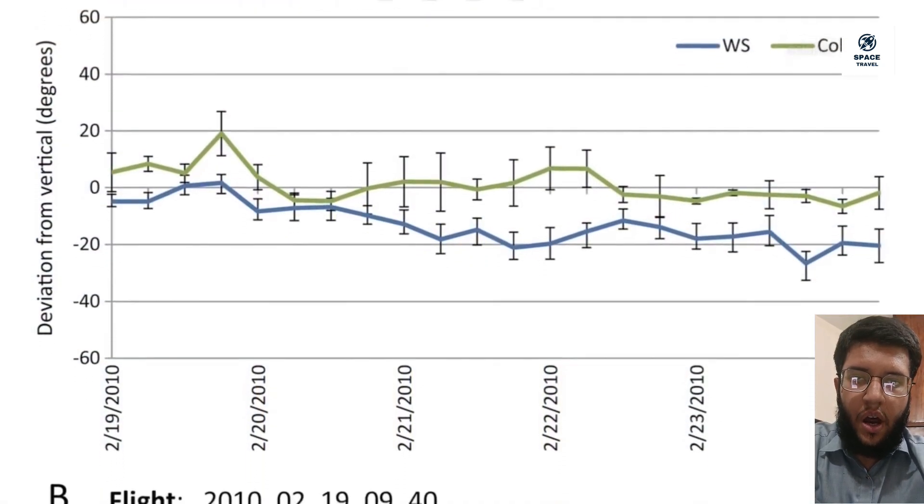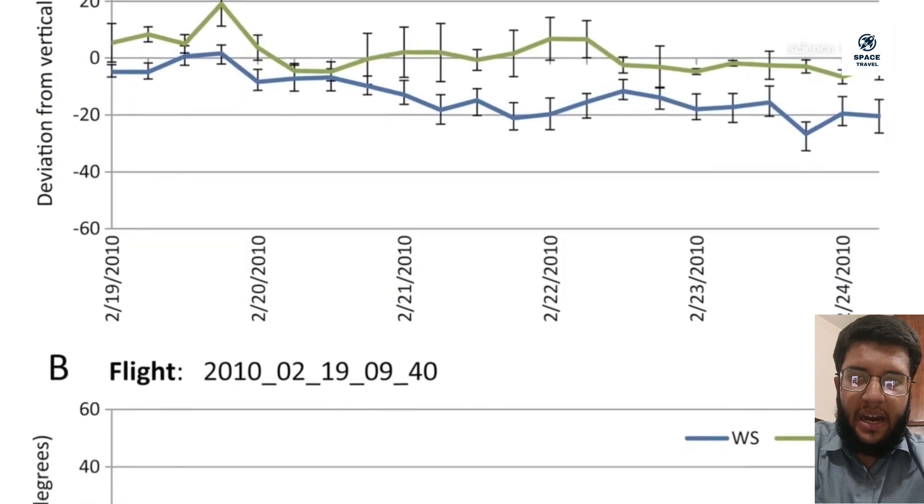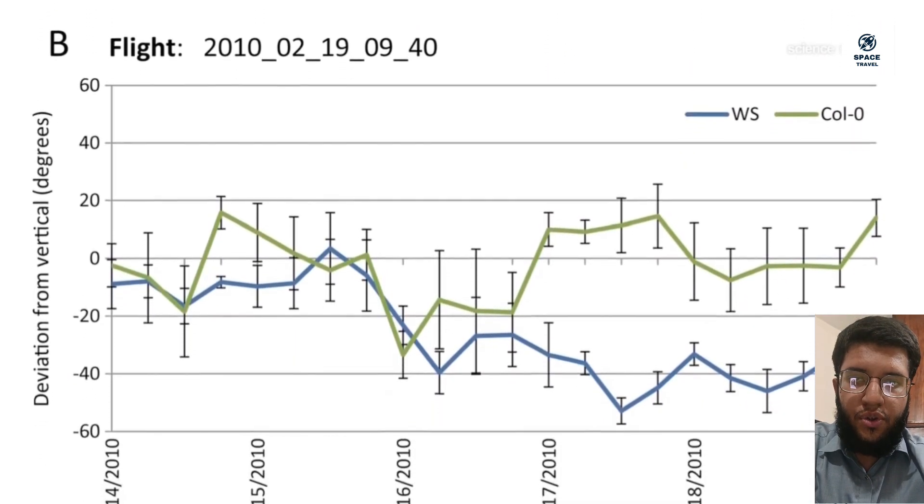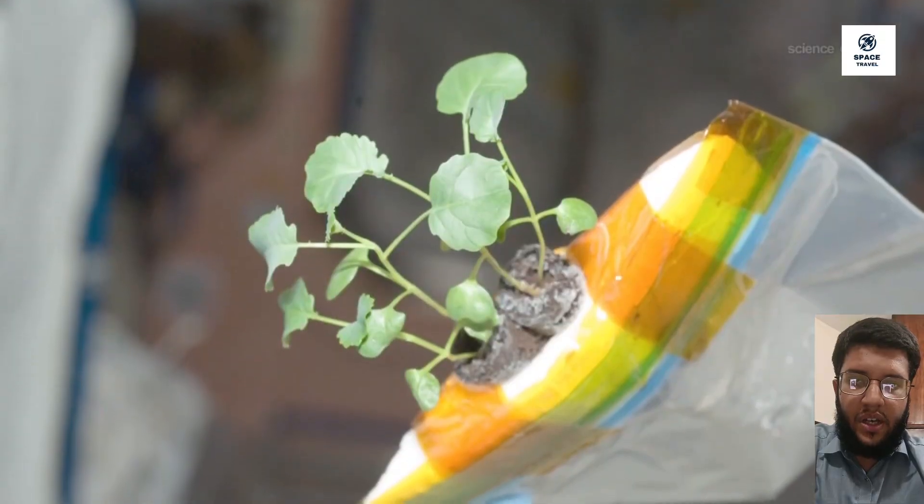Paul and Ferl also observed how Arabidopsis used light as a gravity substitute for telling up from down. With lamps shining overhead, roots grew clearly away from the leaves, just like on Earth.